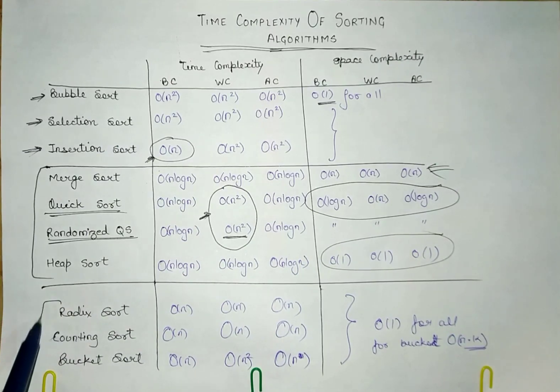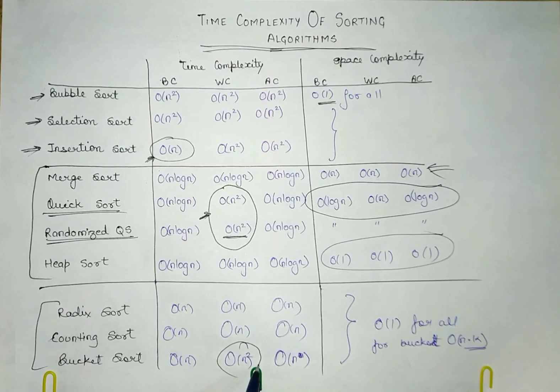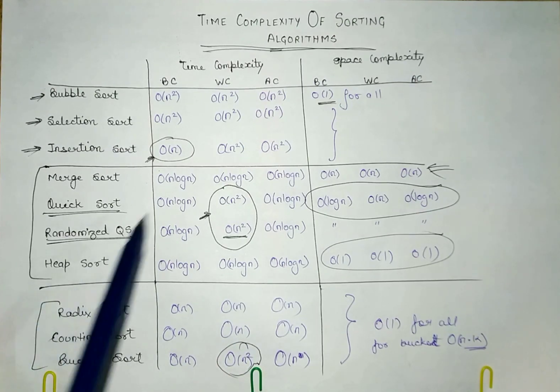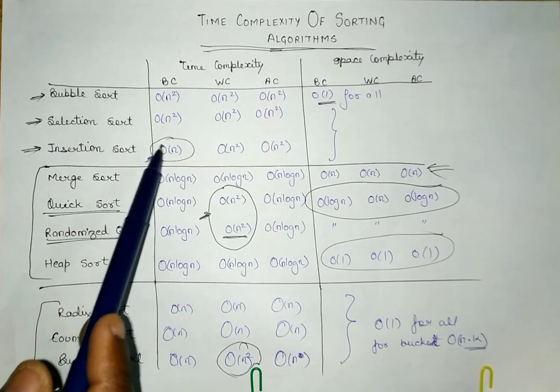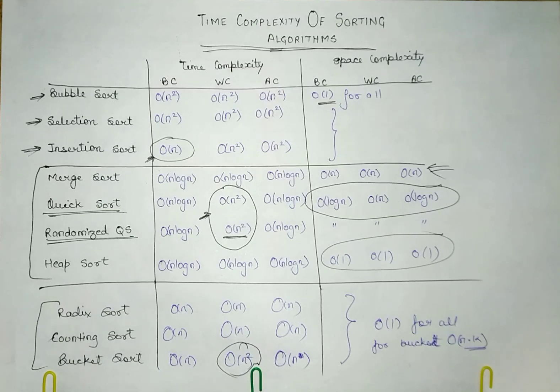Now the thing is non-comparison based sorting. These three are non-comparison based sorting techniques. The time complexity here is order of n, except bucket sort. What you have to memorize is: for insertion sort best case, quick sort worst case, and bucket sort worst case. All the rest of things are easy.